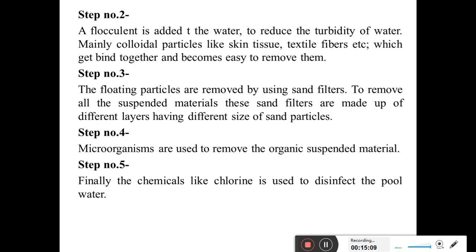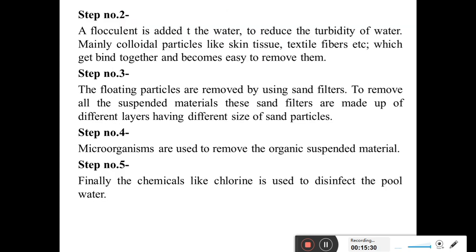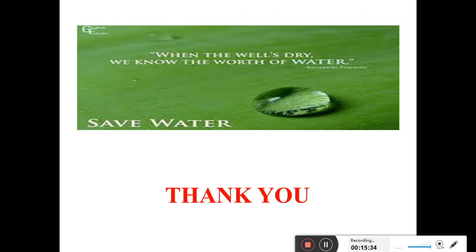Finally, disinfection is carried out. Chemicals like chlorine or ozone treatment are mainly used in the water treatment plant for disinfection, and in this way the swimming pool water is kept clean. I hope all of you understood the desalination methods very well — what is meant by desalination, and the different methods like solvent extraction, electrodialysis, solar still, and freezing method. If you have any problems with any method, you can ask me. Thank you, students.